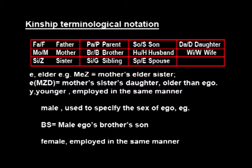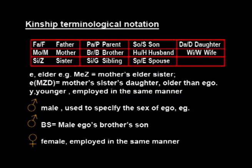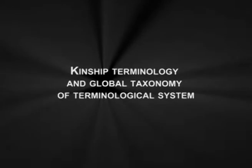The letter 'e' or 'el' stands for 'elder.' For example, MeZ means mother's elder sister, and MZD (mother's sisters' daughters older than ego) is expressed similarly. Likewise, 'y' or 'yo' is employed for 'younger' in the same manner. The symbol for Mars (♂) is used to signify male, whereas the symbol for Venus (♀) is used to signify female. In this way, kinship terminologies are used in abbreviation.